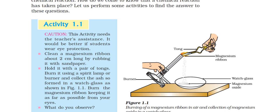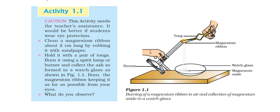In activity 1.1, first of all, a caution: this activity should be done in the presence of a big or elder person, as it may carry some risk, and eye protection is very important. You have a magnesium ribbon — take a 2 cm long piece, rub it with sandpaper, and clean it. Hold it with a pair of tongs and burn it in a spirit lamp or a burner. Collect the ash or particles in a watch glass, as shown in the figure.